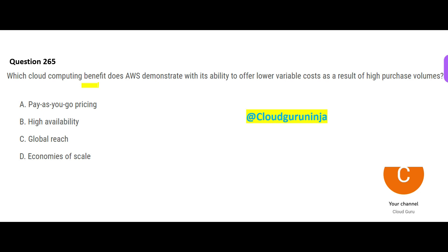The next question asks about a benefit of cloud computing — specifically, which benefit is linked to offering lower variable costs as a result of high-volume purchases. Think of buying apples: if you buy two pounds, you might pay five dollars per pound. But if you buy twenty pounds, the per-pound cost may drop to three-fifty. Buy more, get a discount, pay less.